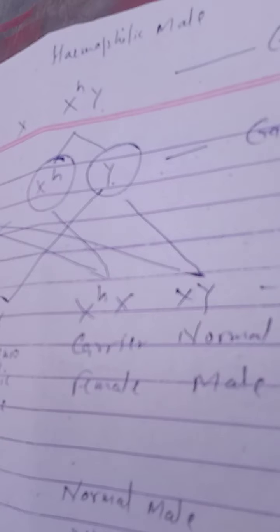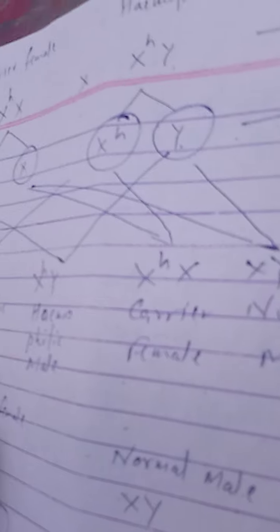In a cross between a normal female and a hemophilic male, we find carrier females and normal males. When we cross a carrier female with a hemophilic male, we find carrier female, hemophilic female, hemophilic male, and normal male. When we cross a carrier female with a normal male, we find carrier female, normal female, hemophilic male, and normal male.